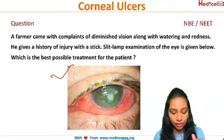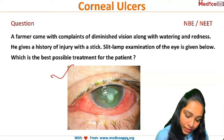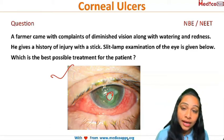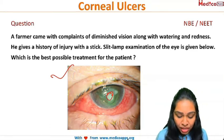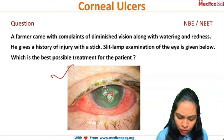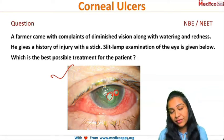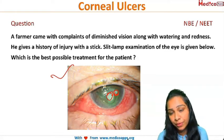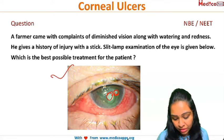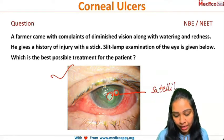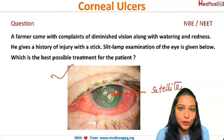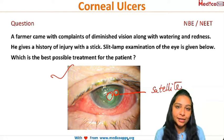Let's try to diagnose the patient before we look at the options. Here we are seeing an ulcer in the center of the cornea. What are we noting over here? There is another small ulcerative lesion away from the main ulcer — we are calling it the satellite lesion.